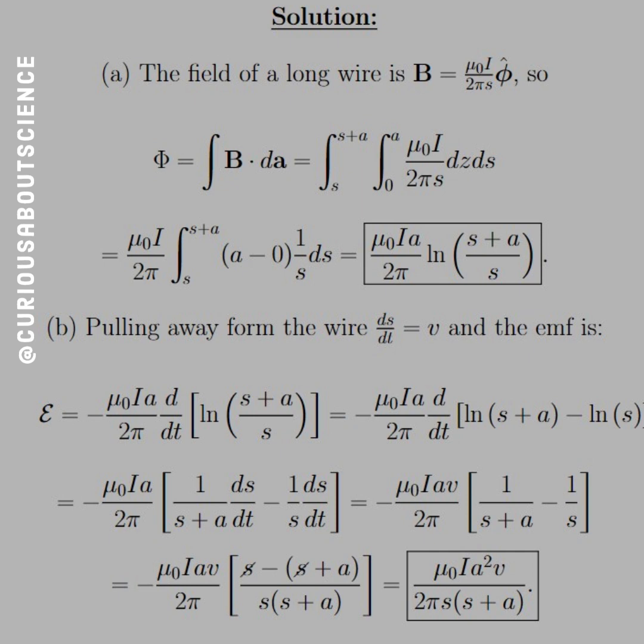Alright, here's the thing with the next part. Pulling away from the wire, that directly increases the distance S, so DSDT is equal to V here, okay? Why does that matter? Well, for the flux rule, the EMF is a negative derivative with respect to time of the flux. So since mu not I A over 2 pi is all a constant, we just push it out front. Now we just have D by DT of LN S plus A over S.